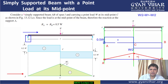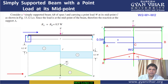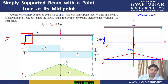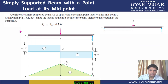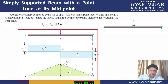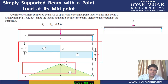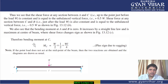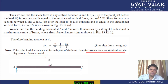So in this way we draw the shear force and bending moment diagram for a simply supported beam with a point load at the midpoint. If the load were not at the midpoint, we would first calculate support reactions using the moment equilibrium condition — summation of moments about any point equals zero — to find Ra and Rb, and then draw the diagrams as usual.